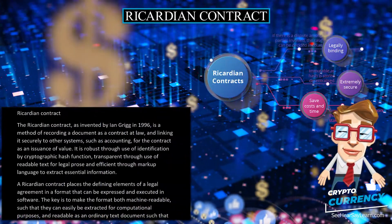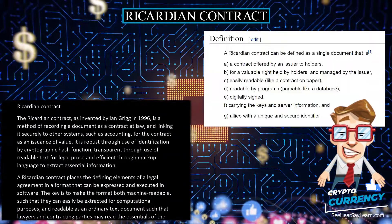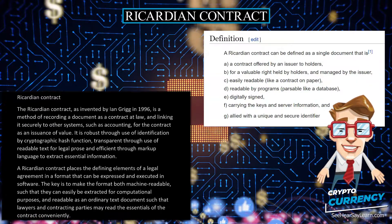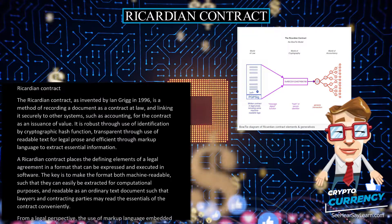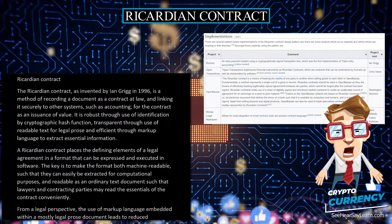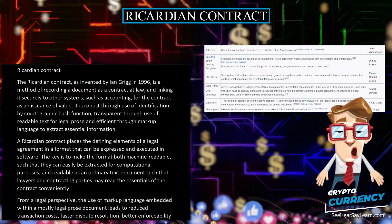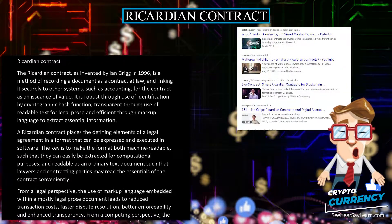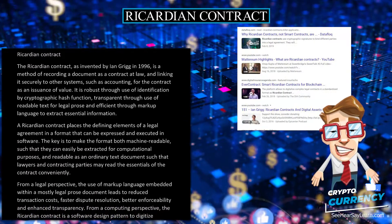The Ricardian Contract, as invented by Ian Grigg in 1996, is a method of recording a document as a contract at law and linking it securely to other systems, such as accounting, for the contract as an issuance of value. It is robust through use of identification by cryptographic hash function, transparent through use of readable text for legal prose, and efficient through markup language to extract essential information.